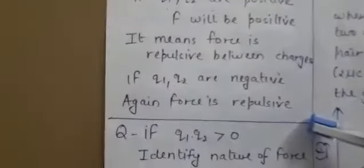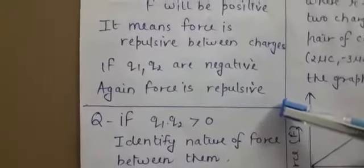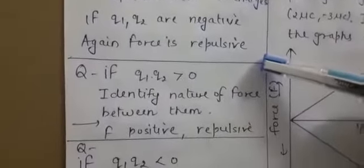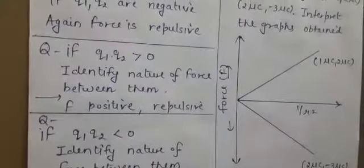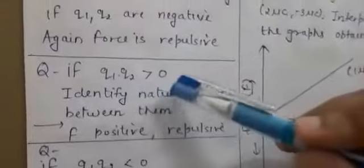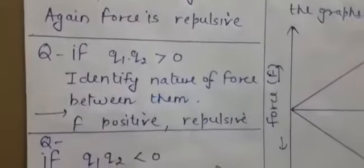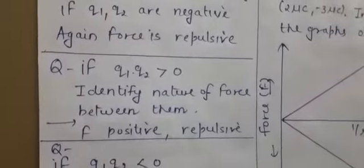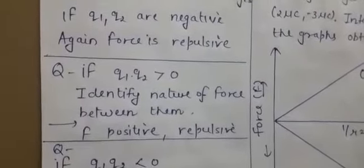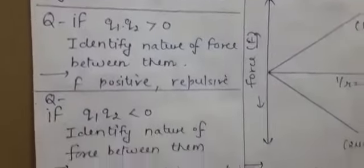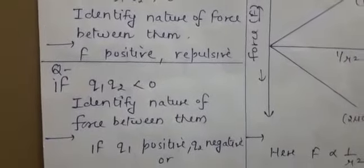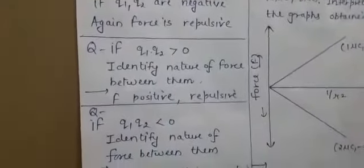Based on this concept, let me discuss a few conceptual questions that are important from the board exam point of view. Question: if Q1 × Q2 is greater than 0, identify the nature of the force between them. Product greater than 0 means the product is positive, which leads the force to be positive. When force is positive, it is repulsive. So the answer is: the two charges are like charges and the force will be repulsive.